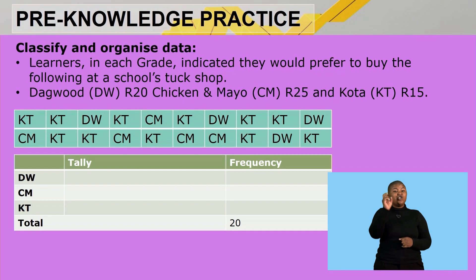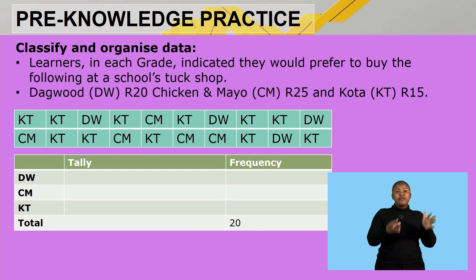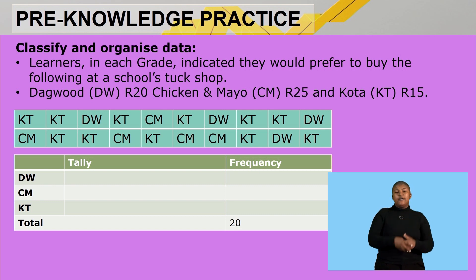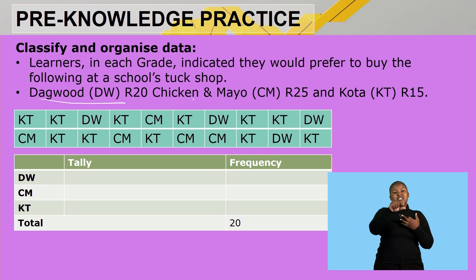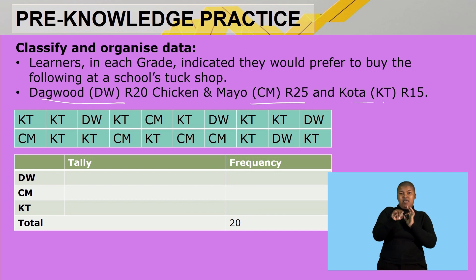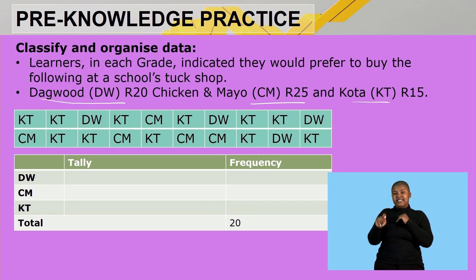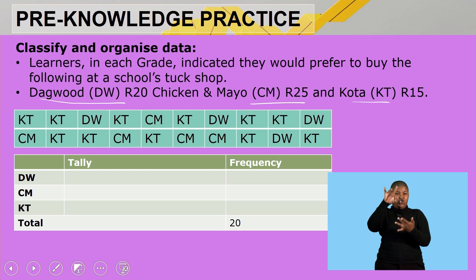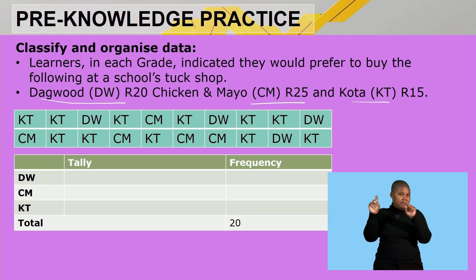You should also be able to classify and organize data. In this example, learners in each grade indicated they would prefer to buy the following at the school stock shop. The three options are: duck wood at 20 rand, chicken and mayo at 25 rand, and quarter at 15 rand. We are to complete a tally and a frequency table with columns for duck wood, chicken and mayo, and quarter.